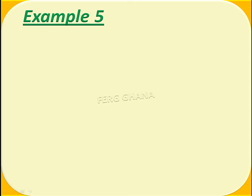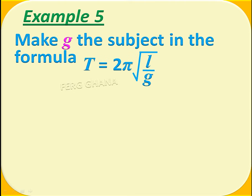Example 5. Make G the subject in the formula T equals 2 pi multiplied by the square root of L over G.